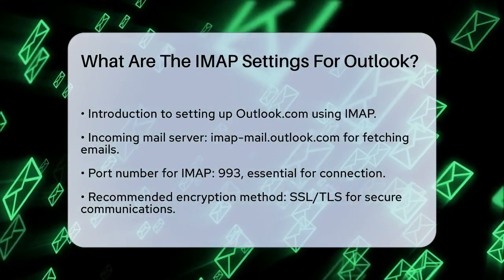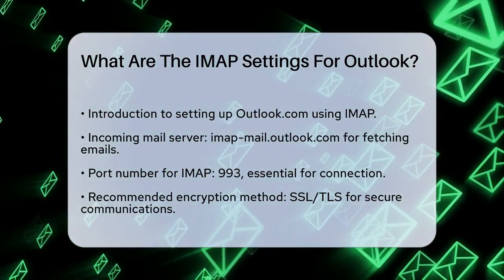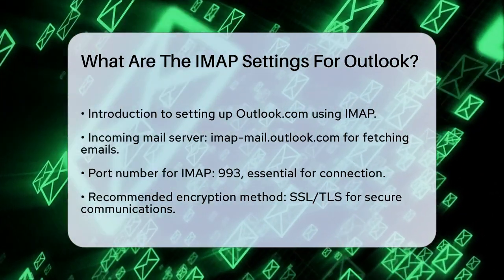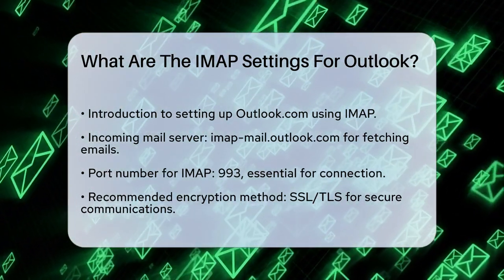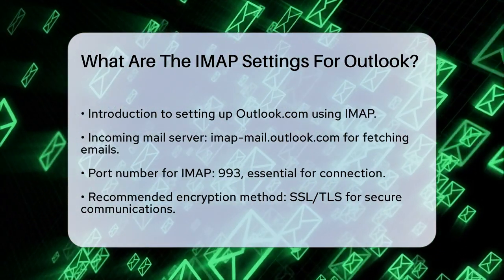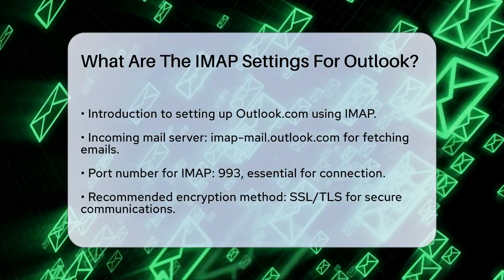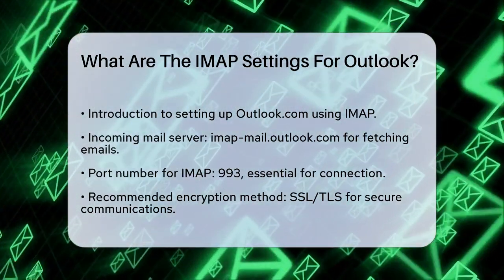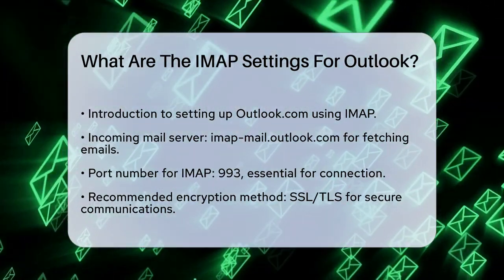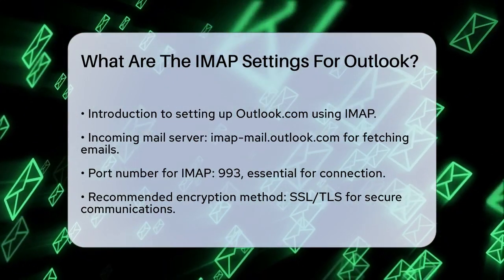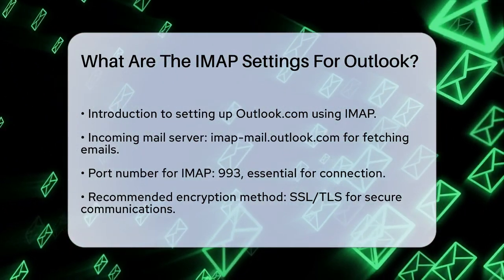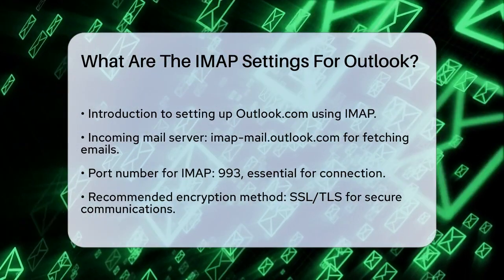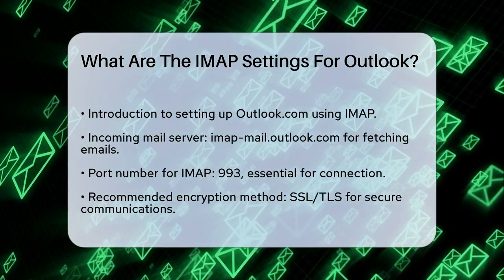First, you need to know the server settings. For IMAP, the incoming mail server is imap-mail.outlook.com. This is where your emails will be fetched from. Next, you need to set the port number. For IMAP, the port is 993. This is crucial for the connection to work properly.